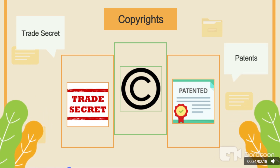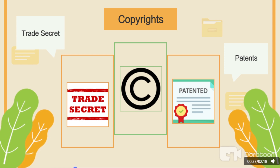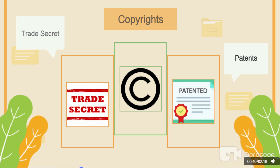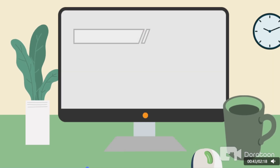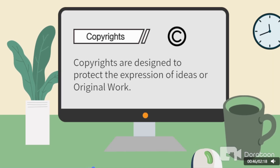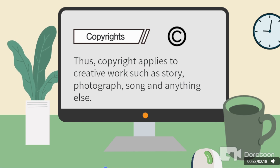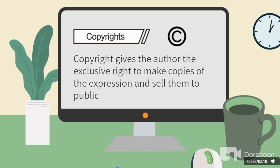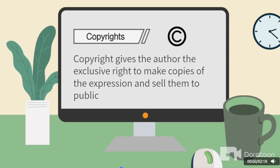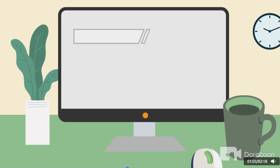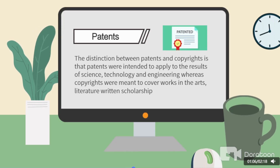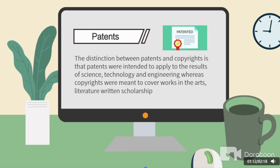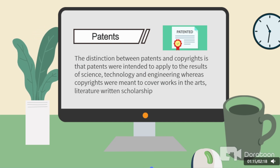Among the components that can be used to protect programs and data are copyrights, trade secrets, and patents. Copyrights are designed to protect the expression of ideas or original work, and apply to creative work such as stories, photographs, songs, and anything else. Copyright gives the author the exclusive right to make copies of the expression and sell them to the public. The distinction between patents and copyrights is that patents were intended to apply to the results of science, technology, and engineering, whereas copyrights were meant to cover works in the arts.